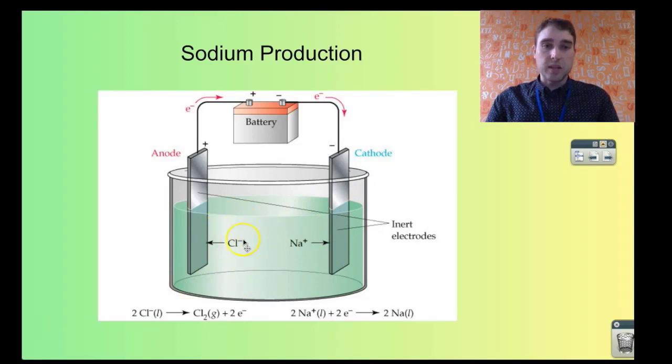And the chloride ions over here would be oxidized. Oxidation is loss. The chloride ions lose their electrons and you make chlorine gas. Chlorine gas would be bubbling up over here. So this is how you make active metals from their salts. You can use this to make sodium, potassium, lithium and so on.